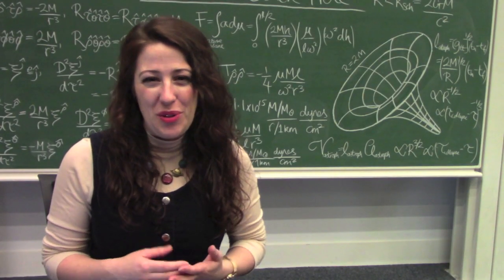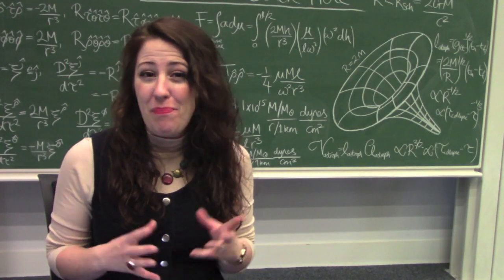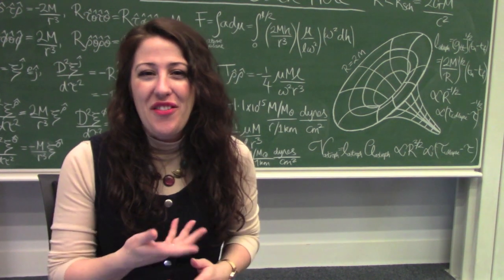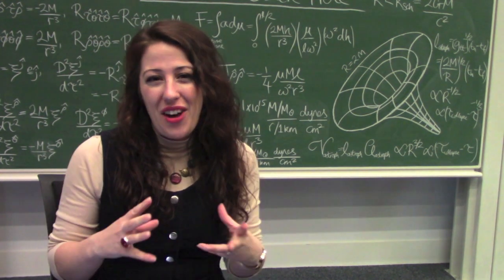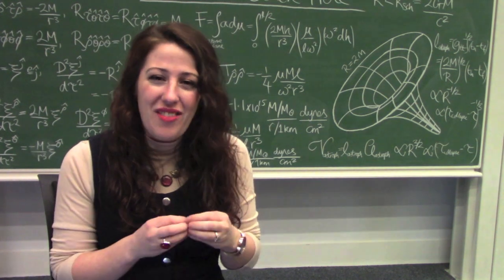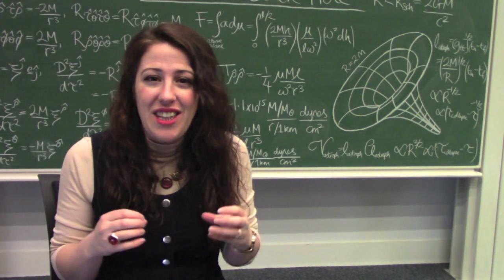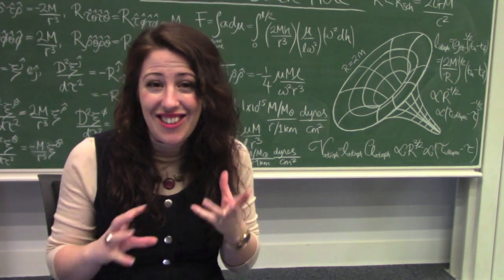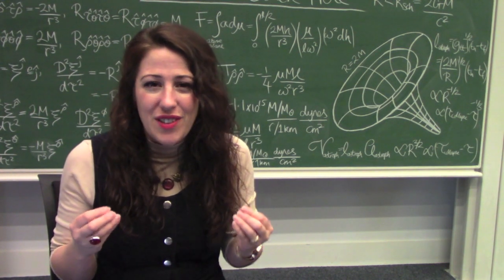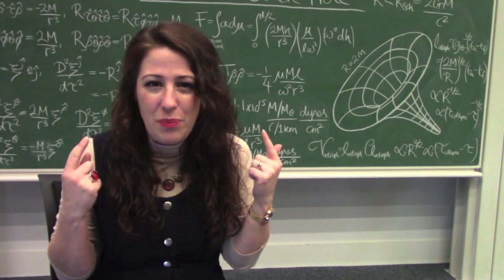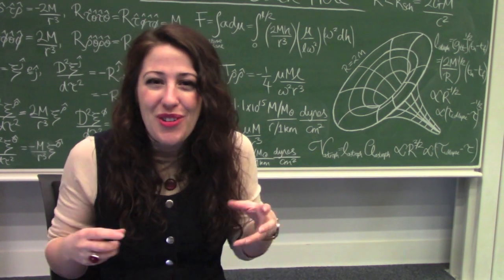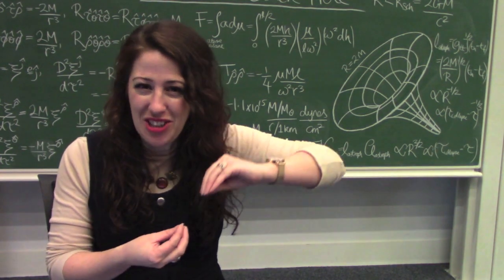What happens if you fall into a black hole depends on the size of the black hole. For example, a black hole that's a few times heavier than the sun — around the event horizon the gravitational field changes so dramatically that the gravitational force your head experiences would be completely different to your feet, causing you to be stretched out.